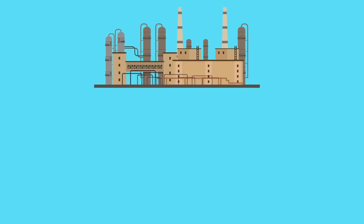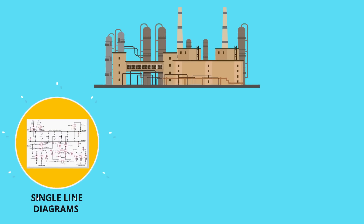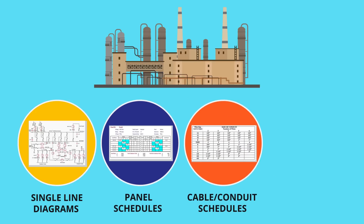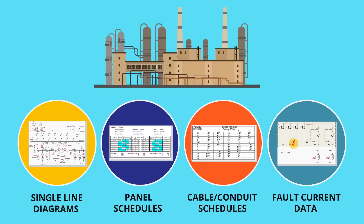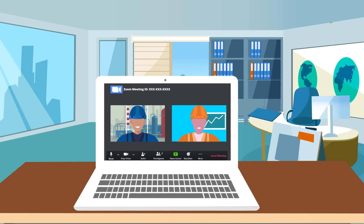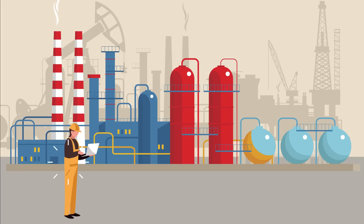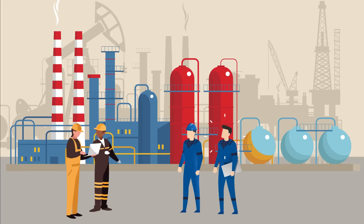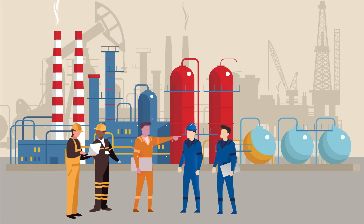First, collect existing documentation on the system, including single-line diagrams, panel schedules, cable conduit schedules, and utility-available fault current data. Following this, perform field verification with a qualified and knowledgeable engineer or technician. Ensure the person verifying equipment is experienced in performing this task to minimize missing data.